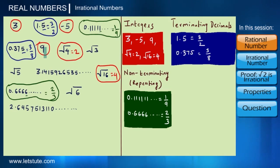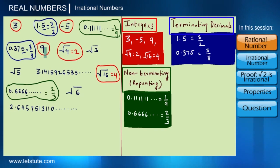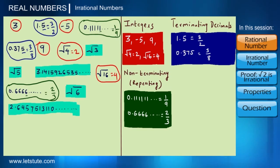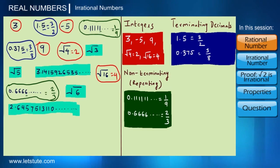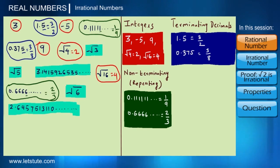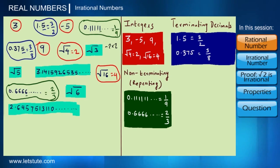We have now distinguished between integers, terminating decimals, and non-terminating repeating decimals. There are some numbers which are unused. Note that we cannot easily find the value of root 3 — in the case of root 4, we found the value easily because 2 × 2 = 4, but for root 3 we don't know what number times itself gives 3.